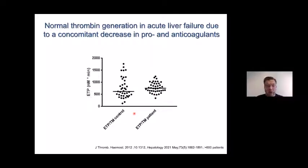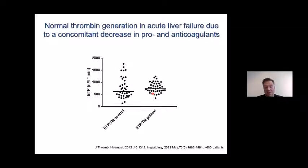Looking at coagulation with thrombin generation assays, you can again see evidence for rebalanced hemostasis. Thrombin generation experiments in healthy controls versus patients with ALF show really not so much difference — despite the fact that there is a defect in procoagulants reflected by an elevated INR, there are also defects in anticoagulant pathways, and these rebalance each other, giving net normal thrombin generation. Normal thrombin generation in ALF was recently confirmed in a much larger cohort. The INR suggests a bleeding tendency, but if you look deeper, hemostasis is actually quite well preserved.